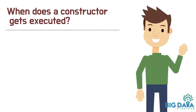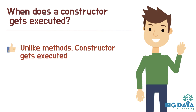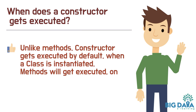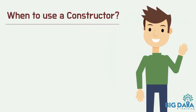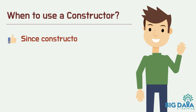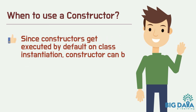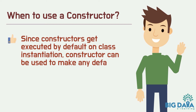When does a constructor get executed? Unlike methods, a constructor gets executed by default when a class is instantiated, whereas methods will get executed only when called. Since constructors get executed by default on class instantiation, a constructor can be used to make any default initialization.